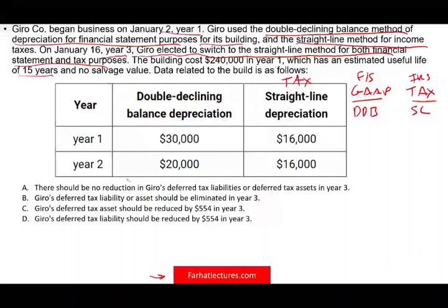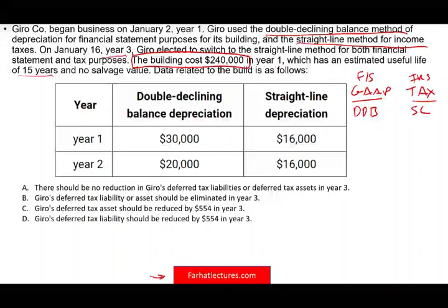How could I turn this into a complicated simulation? Rather than give you the building cost directly, I could give you an exhibit with closing working papers showing the building was purchased two years ago, and you'd have to scan it to find the $240,000 cost. Rather than computing the depreciation for you, I could give you an intimidating depreciation schedule — one for double declining balance and one for straight line — and have you pull those numbers.